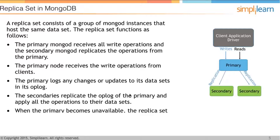The primary node receives write operations from clients. The primary logs any changes or updates to its data set in its op log. The secondaries replicate the op log of the primary and apply all the operations to their own data sets.